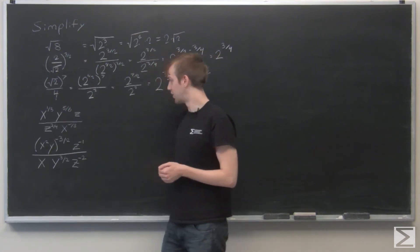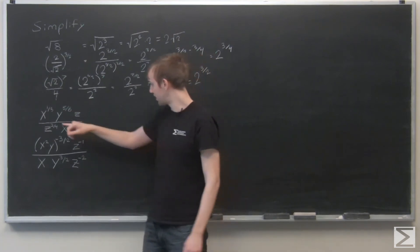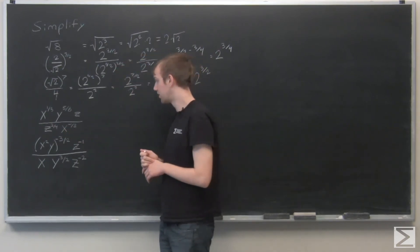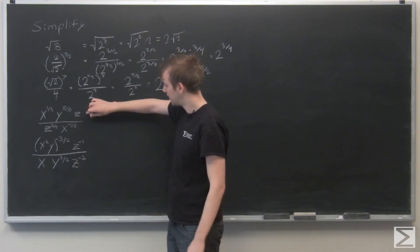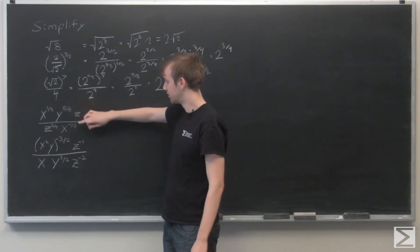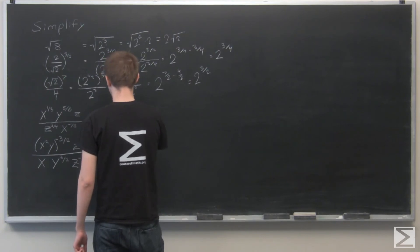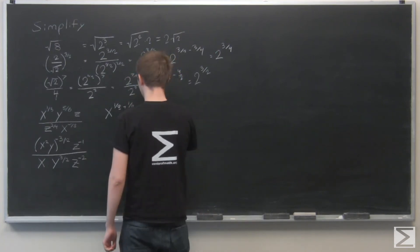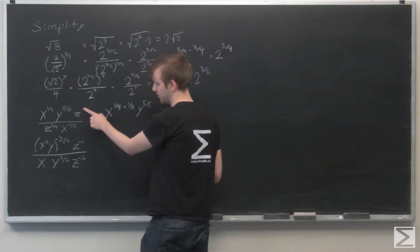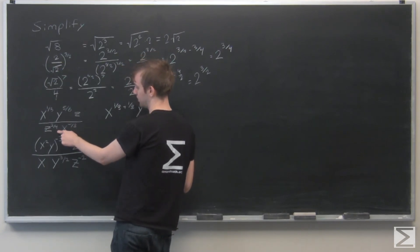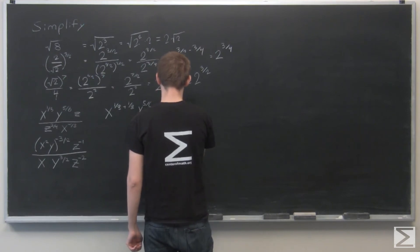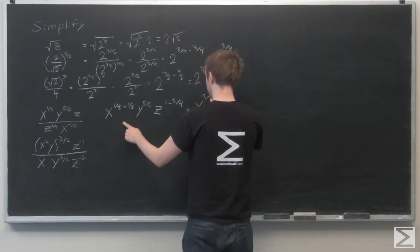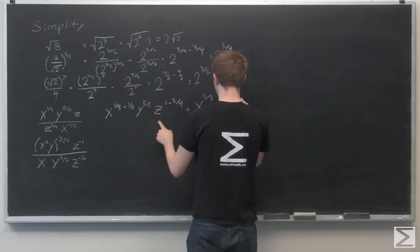This expression has x's, y's, and z's: x to the 1 third times y to the 5 sixths times z, all over z to the 3 fourths times x to the negative 1 third. For x: x to the 1 third divided by x to the negative 1 third means subtracting 1 third minus negative 1 third, giving x to the 2 thirds. The y to the 5 sixths stays the same. For z: z to the 1 minus z to the 3 fourths gives z to the 1 fourth. The simplified form is x to the 2 thirds, y to the 5 sixths, z to the 1 fourth.